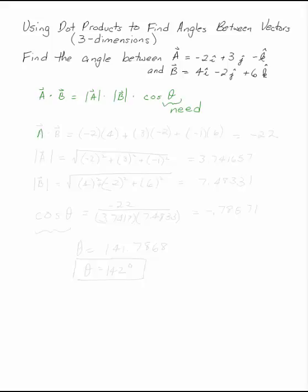So we can find the dot product by multiplying the i components and the j components and the k components and adding them up. This is minus 22.